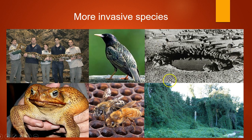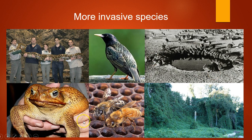In Australia, rabbits were introduced — since there weren't many native mammals, rabbits thrived. Australia also has the invasive cane toad. Additionally, African killer bees — very aggressive bees — are moving up into the United States. And kudzu is also a problem there.